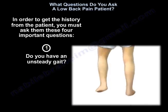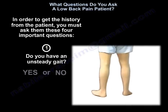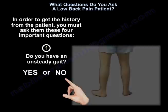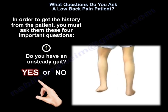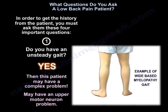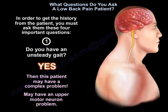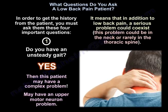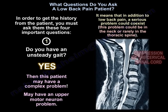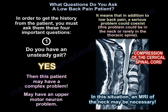The first question: do you have a steady gait? The answer is yes or no. If the patient says his gait is unsteady, then this patient may have a complex problem — an upper motor neuron problem. It means that in addition to low back pain, a serious problem can coexist. This problem can be in the neck or in the thoracic spine, and an MRI of the neck may be necessary.